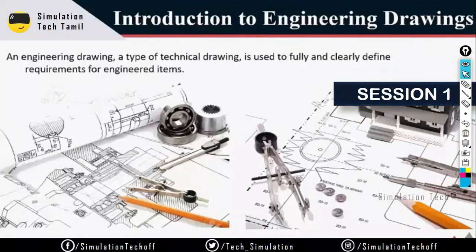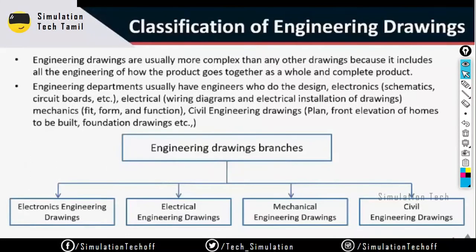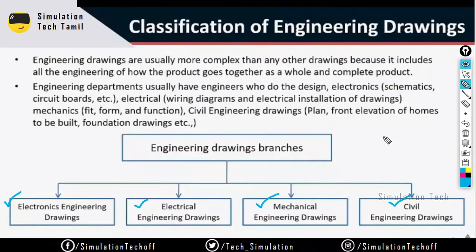So let's see engineering drawings. In engineering drawings we have four different types of branches: Electrical, Electronics, Mechanical, and Civil Engineering. What do we do with AutoCAD? Department-wise classified: Electronics, Electrical, Mechanical, and Civil. Most of AutoCAD usage is in Civil and Mechanical, with Electrical and Electronics as well. Majority is Civil and Mechanical.